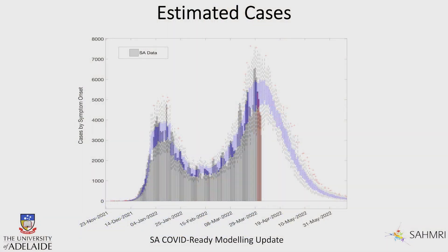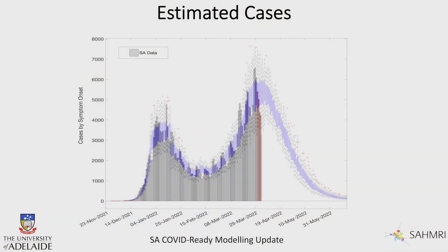Looking at our first slide, it shows the total number of cases by the date of onset of symptoms. The little red bar is the median in the mathematical model — what we would be expecting — and then there's a 25th to 75th percentile shown in blue around that, giving some sense of the probability of where we might be heading. Further out, the two ends represent approximately the 5th to 95th percentile.